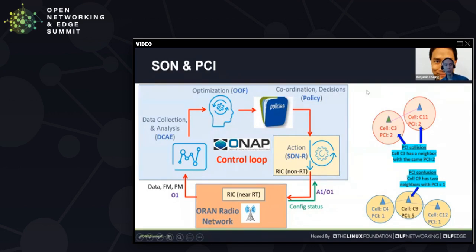Within ONAP there's a control loop developed using OF, the optimization platform component, which can evaluate policies, make decisions, and send new values down to the RAN. Over ONAP it can receive information from the RAN network collected through DCAE data collection and analysis to look at the values assigned in the network. This demo demonstrates one of the more interesting applications of SON.